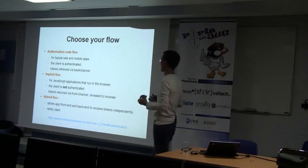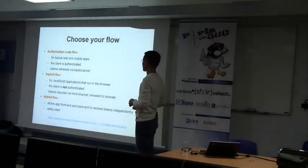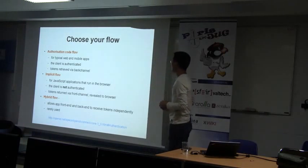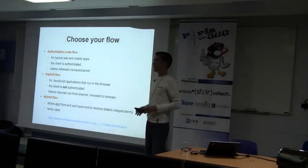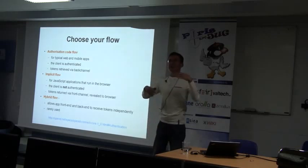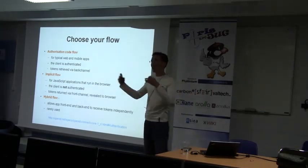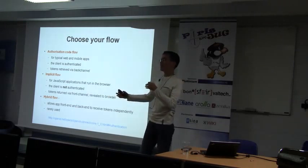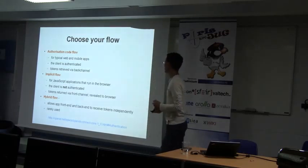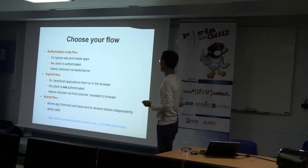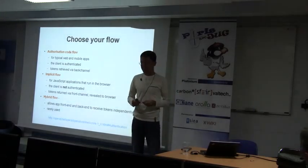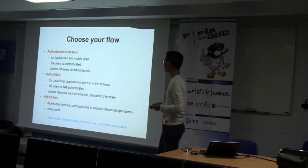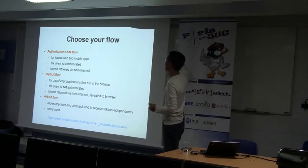OpenID Connect also has the so-called hybrid flow, which is very rarely used. It was intended for applications split into front-end and back-end — for example, a JavaScript front-end rendering the UI and a back-end composed of an array of web services — where you want each end, front and back, to receive tokens independently from one another. But as I said, we mostly tend to use the authorization code flow.